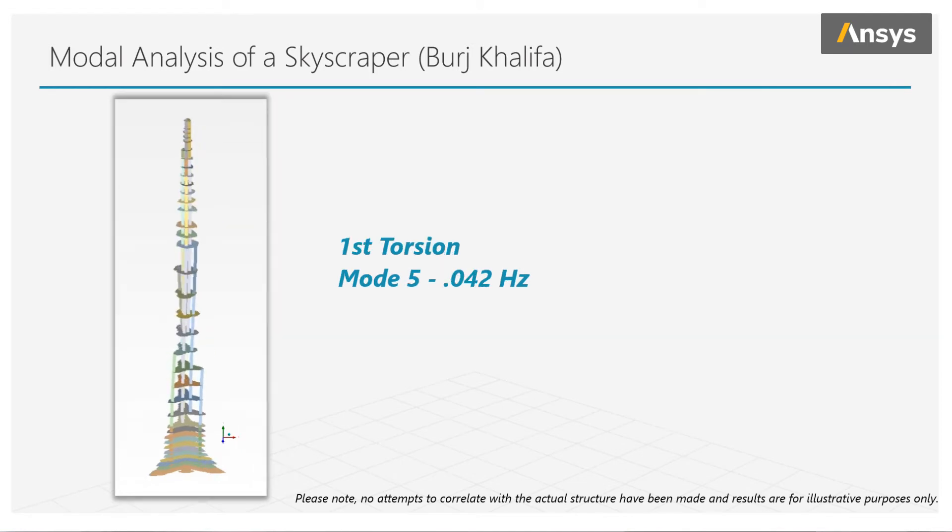Mode number five is the first torsion mode, and notice this deformation shape is very different than the others. If a building was not made stiff enough, and its design permitted to be excited in the torsion direction, say by some wind, the building would rotate about its axis. And this twisting motion could also make the occupants near the top feel uneasy as the building rotates beneath them.